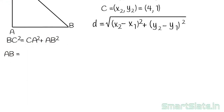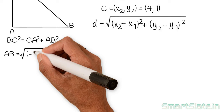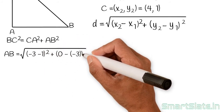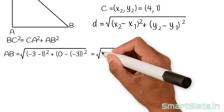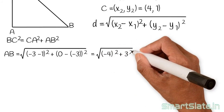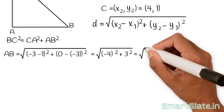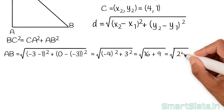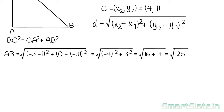First, calculate AB. Replace x1, y1 and x2, y2 with their values. It is square root of (-3 minus 1) squared plus (0 minus -3) squared. That is square root of (-4) squared plus 3 squared, which is square root of 16 plus 9, which is square root of 25. So the distance AB is 5 units.